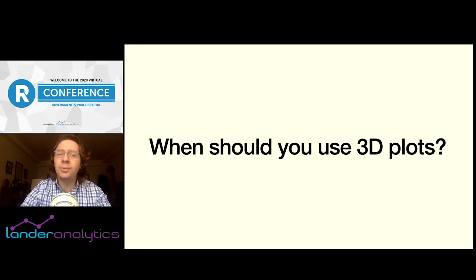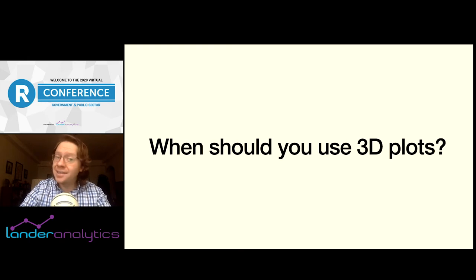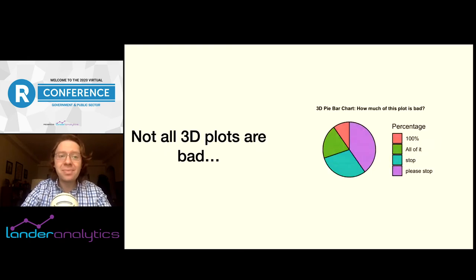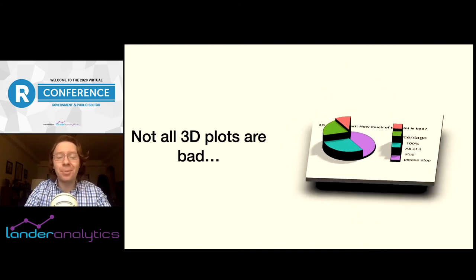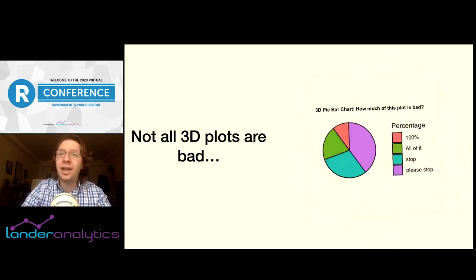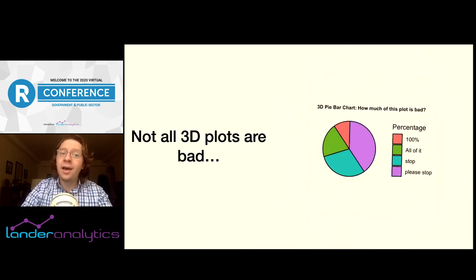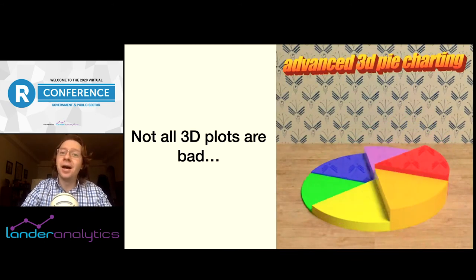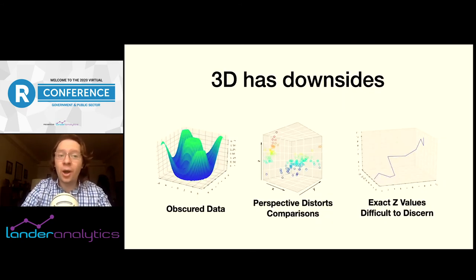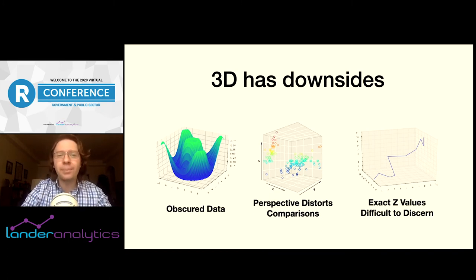After all this, you might be asking yourself: when should I actually use 3D plots like these? What purpose do they serve? Where do they fall within my toolbox? You're right to ask this, because some uses of 3D aren't great. The 3D pie chart is the classic example — pie charts encode data in the size of the wedge, and usually the 3D adds nothing. Generally, superfluous use of 3D is to be avoided, even if you make it look really good. And even non-superfluous 3D plots have some downsides: data can obscure other data that's behind it, the use of perspective can make comparisons between data points harder, and generally you lose the ability to pull out the exact value the z-axis is representing.